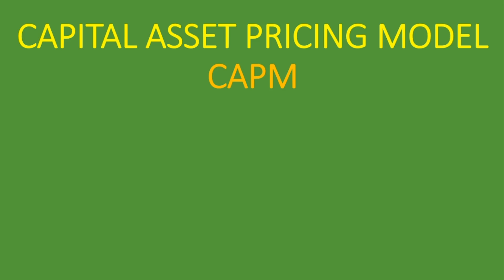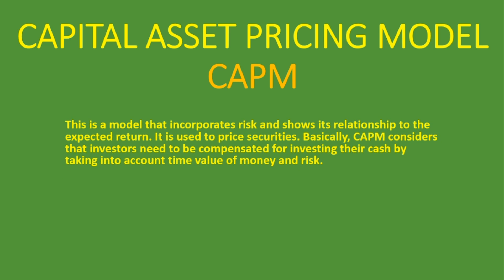What is this all about? This is a model that incorporates risk and shows its relationship to the expected return. It is used to price securities. CAPM considers that investors need to be compensated for investing their cash by taking into account time value of money and risk. So what are we trying to calculate when we're using CAPM, or the capital asset pricing model?